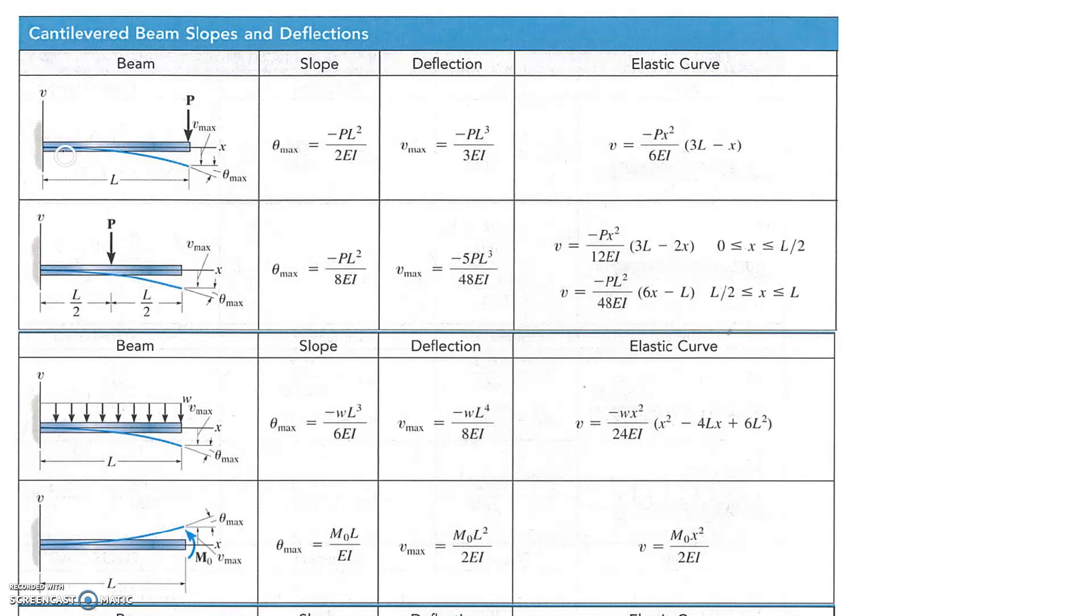So this first entry here corresponds to the point load on the end. That's one of the ones we're interested in, and in fact the second one corresponds to a point load in the exact centre of the beam. So that's the other one that we're going to be interested in.